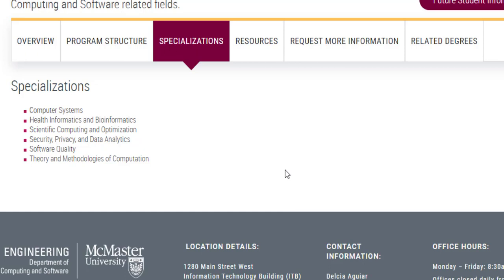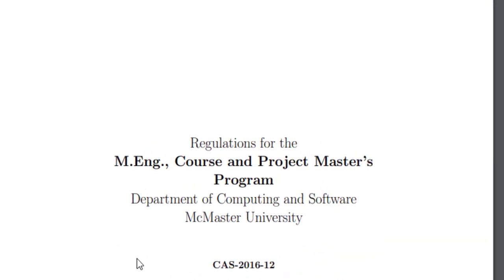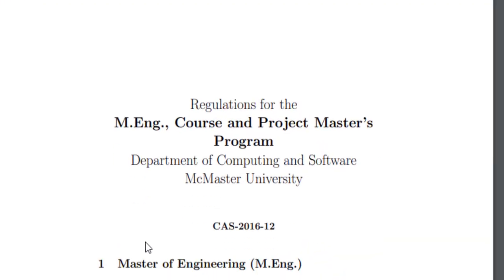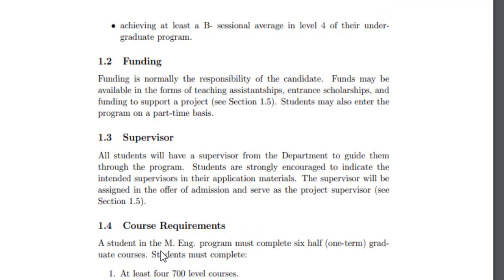You're going to have to select the specialization in order to get yourself into data science. The specialization is known by the name of Security, Privacy, and Data Analytics — that is what you're going to choose. Apart from completing six half courses and an independent project, you have an option of an advanced credit option, so you will be getting extra credit for that. You will be assigned a supervisor from the department to guide you through the program — this is the graduate supervisor.